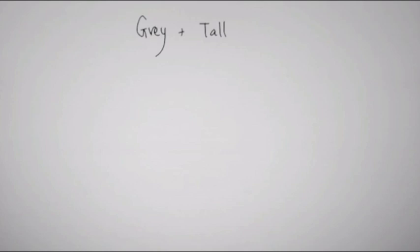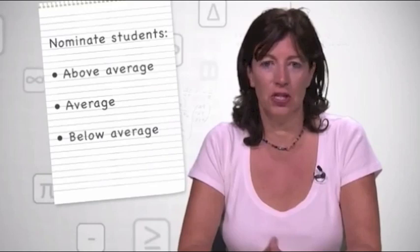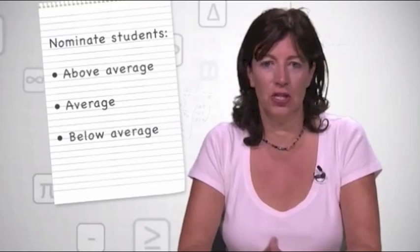Two British professors, Eddie Gray and David Tall, worked with 72 students between the ages of 7 and 13. They asked teachers to nominate students they thought of as above average, average, and below average. They then gave the students various addition and subtraction problems to do and categorized their strategies.